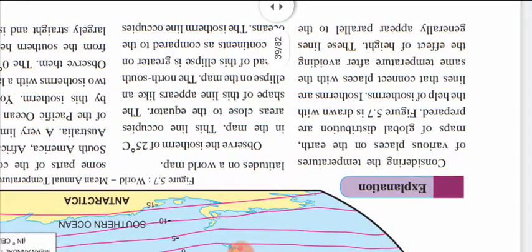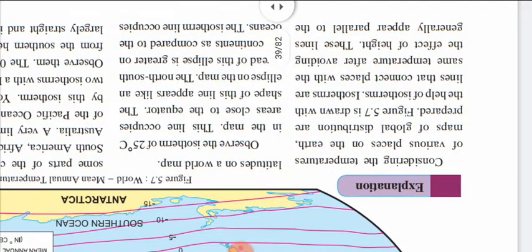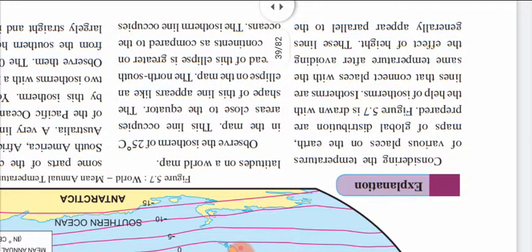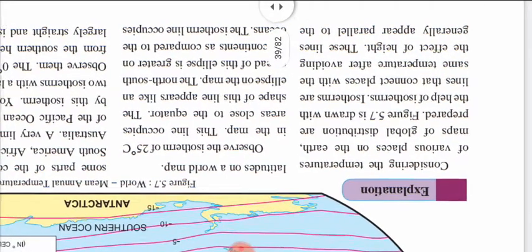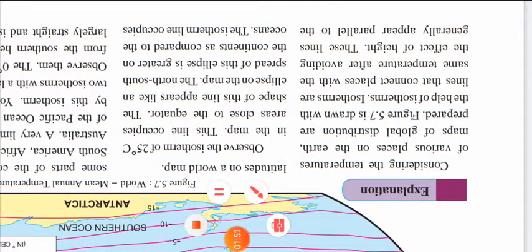Considering the temperatures of various places on the earth, maps of global temperature distribution are prepared. Figure 5.7 is drawn with the help of isotherms. What are isotherms? Isotherms are the lines that connect places with the same temperature after avoiding the effect of height. Or you can say, the lines drawn on a map joining places of equal temperature on the earth are called isotherms.